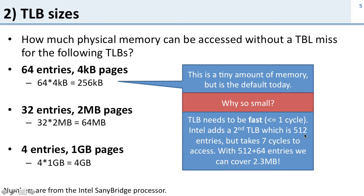What you do is add a second TLB with many more entries, but it takes more cycles. With a first-level TLB of 64 entries and a second-level TLB of 512 entries, we can cover a total of 2.3 megabytes without a miss — which still isn't a lot, and that's why we often use larger pages for applications that need a lot of memory.